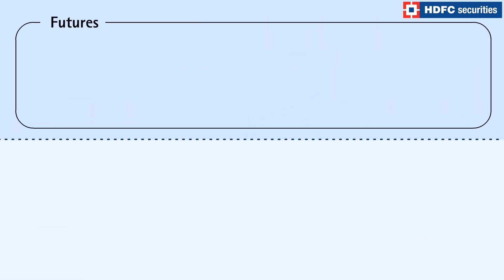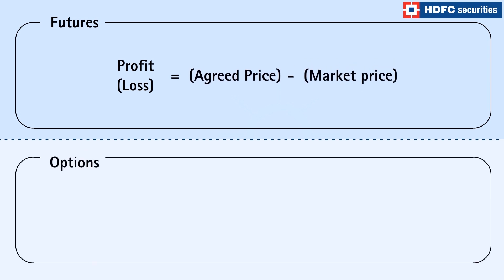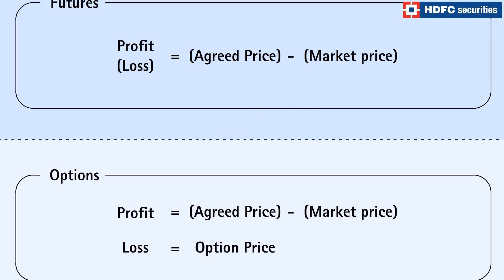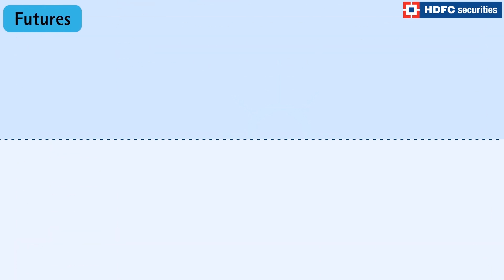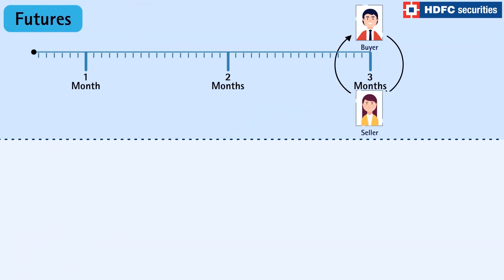The level of risk in futures is high, whereas options carry limited risk. The most you can lose when you buy call or put options is your initial outlay. The execution of the futures contract can only be done on the pre-decided date.